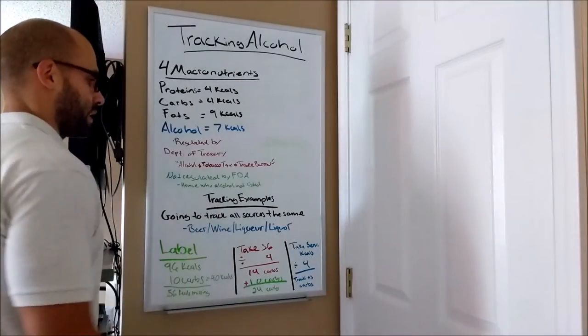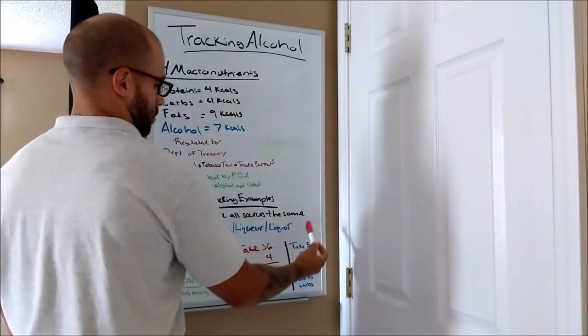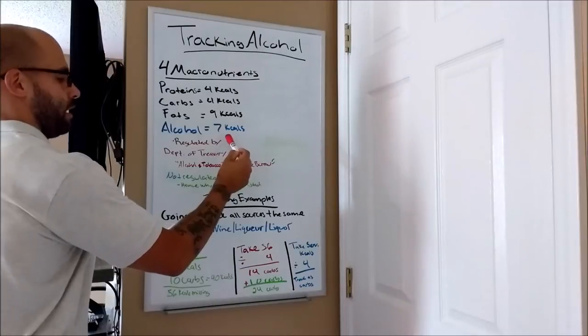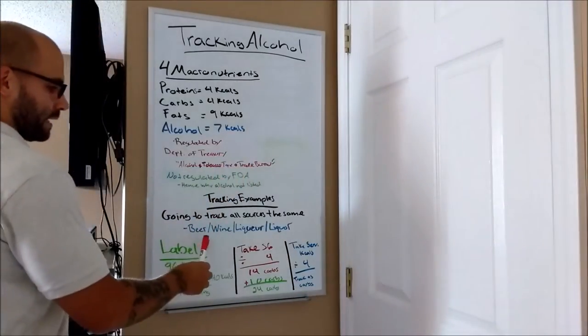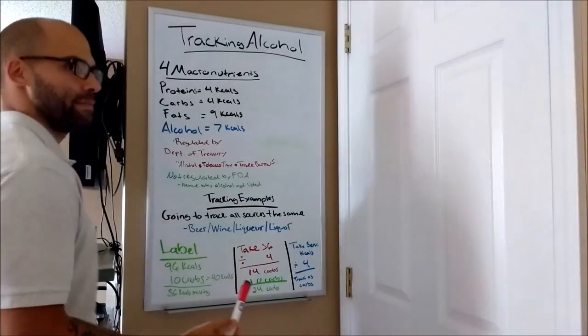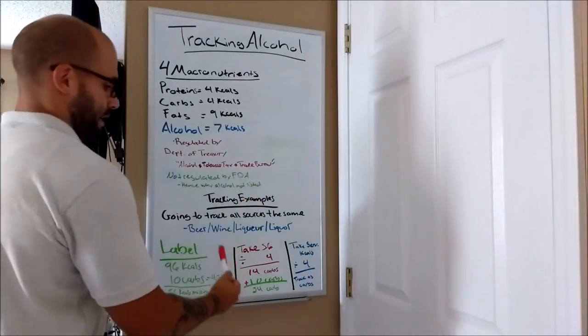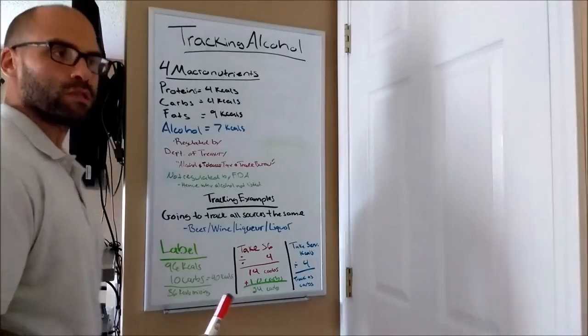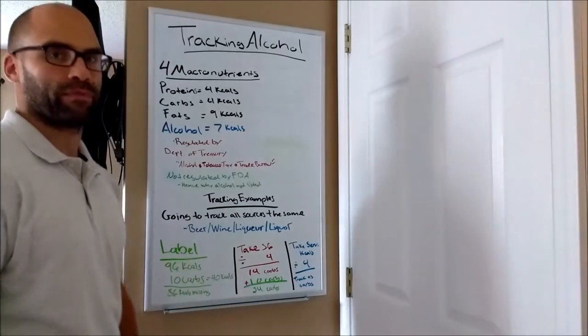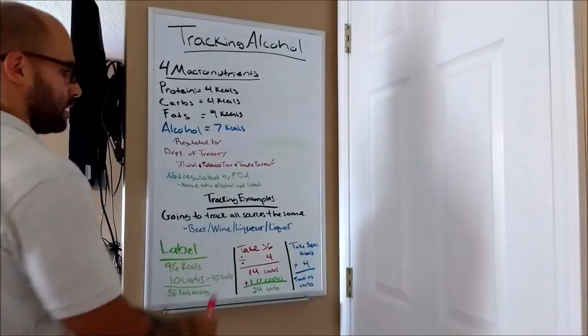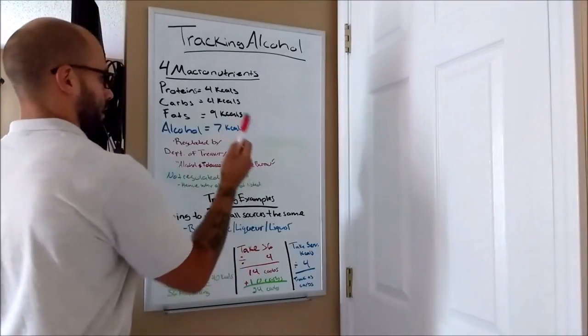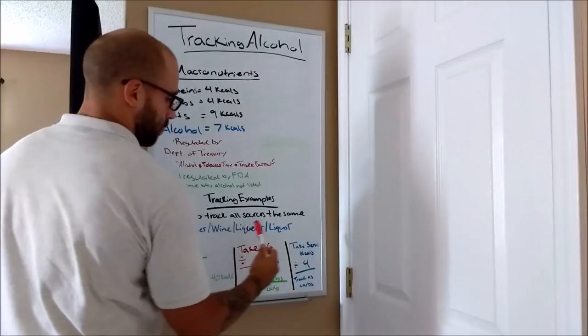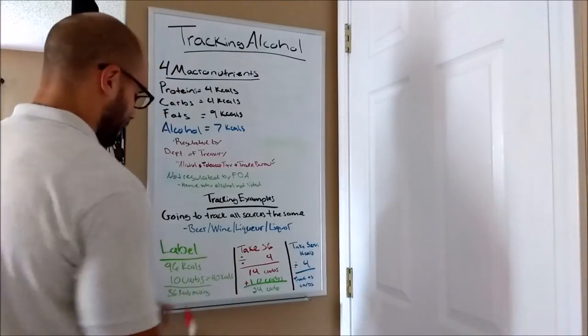So from that perspective, let's kind of just go in really quickly into tracking examples. So pretty much we're going to track all alcohol sources the same. Whether it's beer, wine, liqueur, or liquor, you're going to track it the same because alcohol is the same caloric volume across whatever platform you get. If you look at wine, if you look at the carb source, the carb source is likely going to be like the grapes. Grapes are food. Food is regulated by the FDA. That's why it's on your nutrition label as a carb source. From a beer perspective, you're looking at things like the barley, wheat, and other sources on how your beer is brewed. Liquor and liqueur, really, there's no nutrition labels because it's straight alcohol.